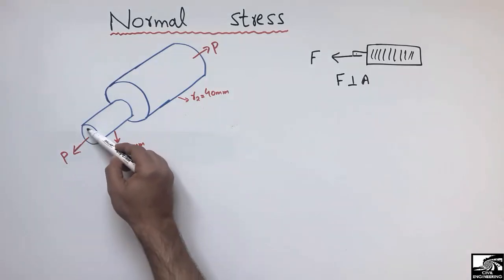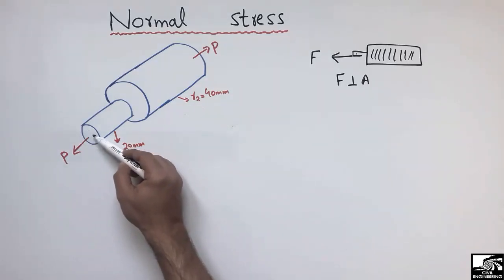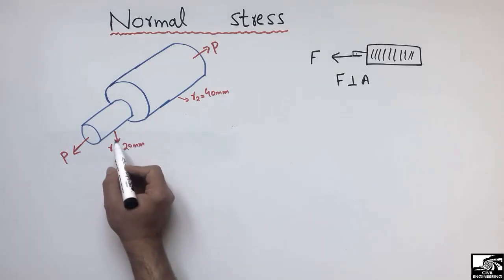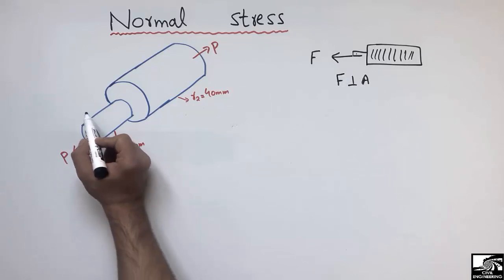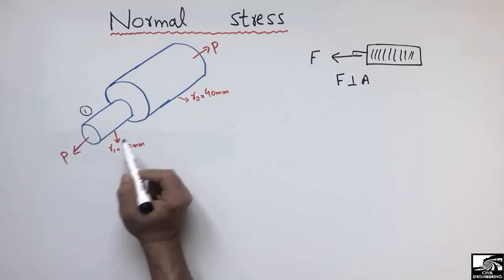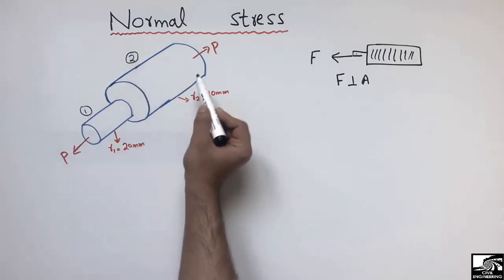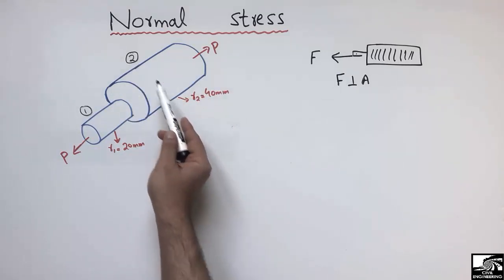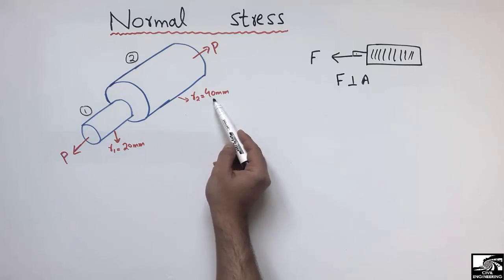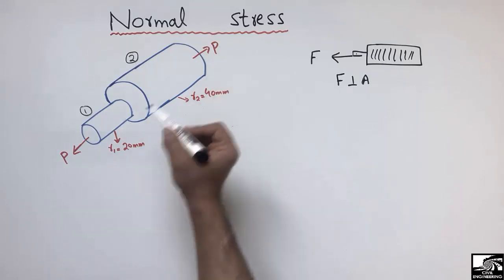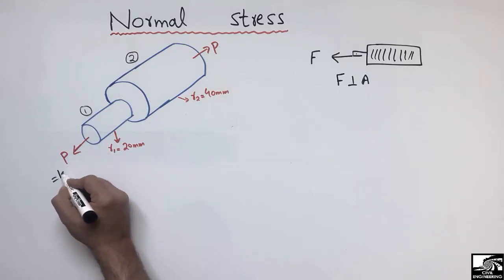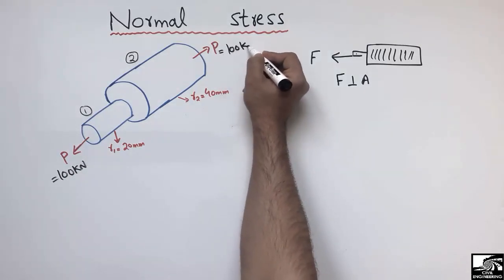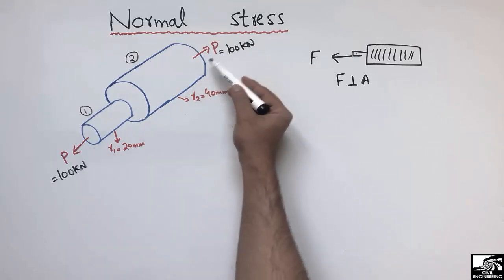This force P is acting perpendicular to the cross-section of the cylinders. There are two cylinders: the first, represented by 1, is the smaller cylinder, and the second, represented by 2, is the bigger cylinder with R2 = 40 mm. Both are subjected to a load of 100 kN.